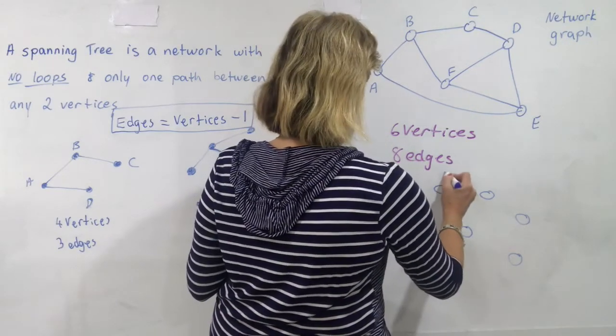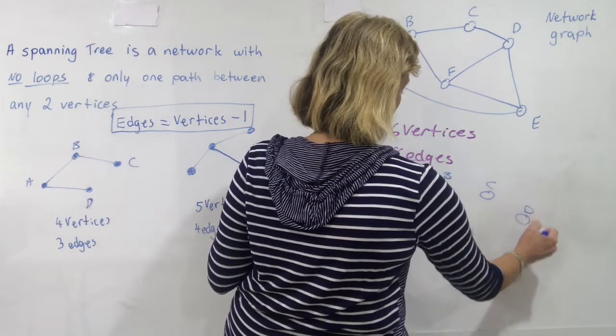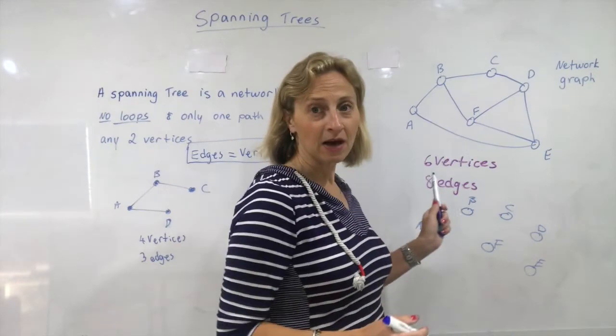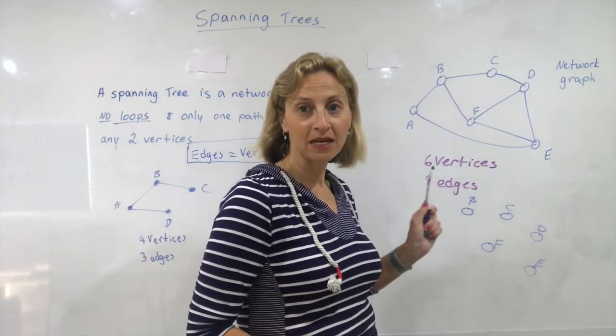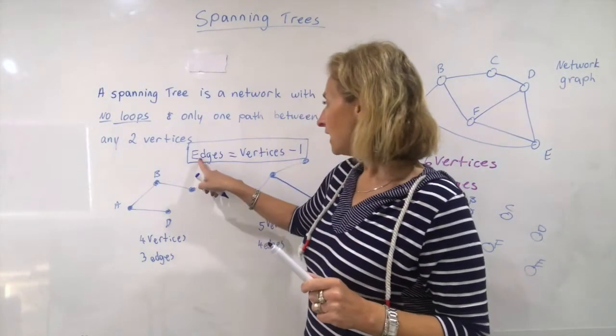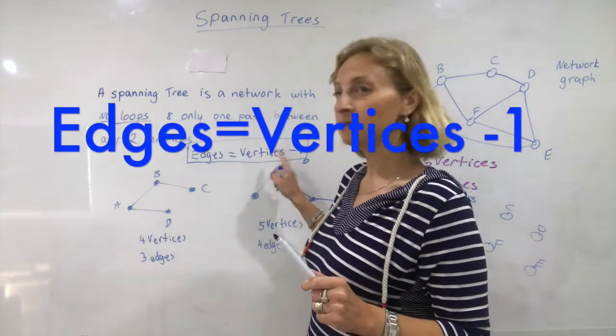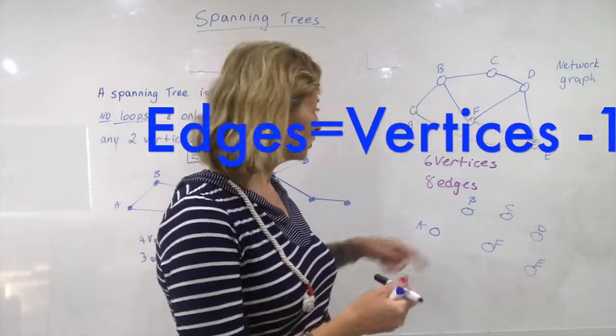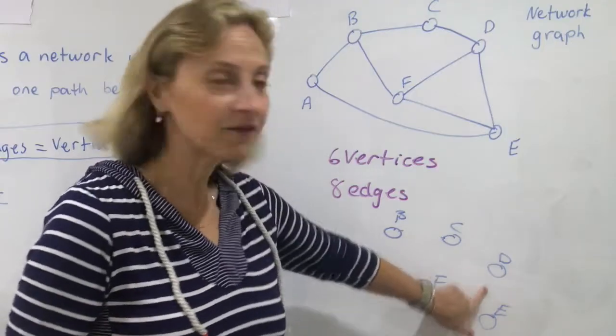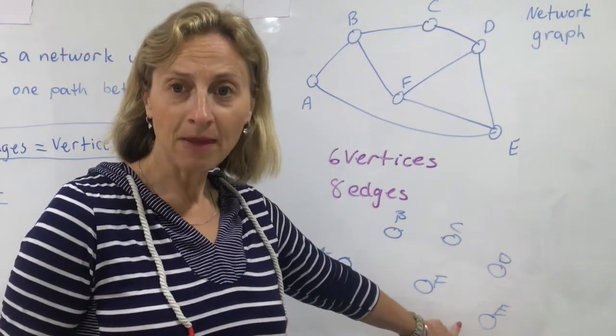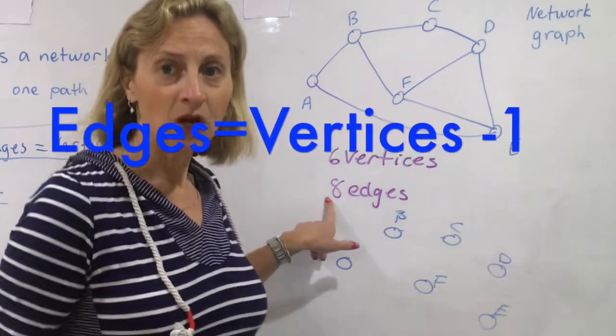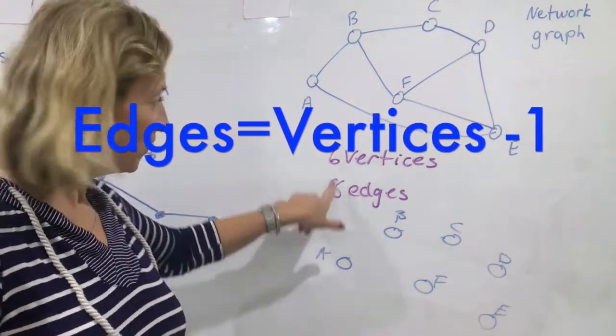A, B, C, D, E, and F. I need to think now about what my rules are for spanning trees. So for a spanning tree, I need the edges to equal the vertices minus one. Now the vertices, I can't change. I can't change the corners. The corners have to still be there. Somehow I need to connect those corners with how many edges? One less edge than vertices.